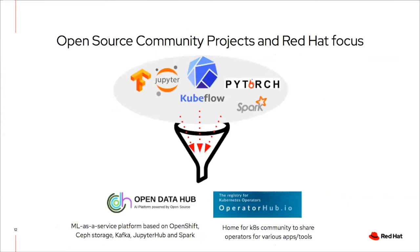Red Hat also works in the open source community on AI/ML projects. Based on those projects, we have rolled out a community project called the Open Data Hub — think of it as a complete machine learning as a service platform built on Red Hat technologies and open source tools and frameworks like TensorFlow, Jupyter Notebook, Kubeflow, Spark, and PyTorch.